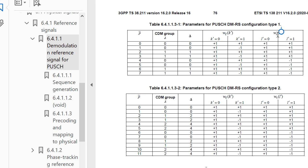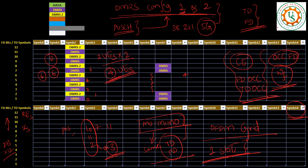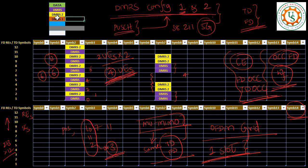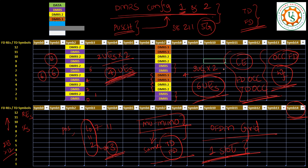I'll cover time domain OCC in upcoming videos. Now, why do we need configuration type 2? Config type 1 gives flexibility for 4 UEs. If you want to support more UEs in multi-user MIMO, you need more ports and more space - that is when config type 2 comes into picture. With config type 2, a second UE occupies one group, a third UE occupies another group. With three UE groups, each having two OCC codes, finally six UEs are possible in multi-user MIMO.